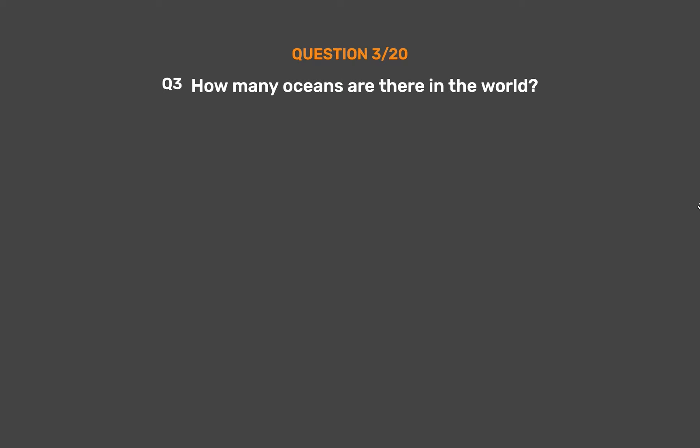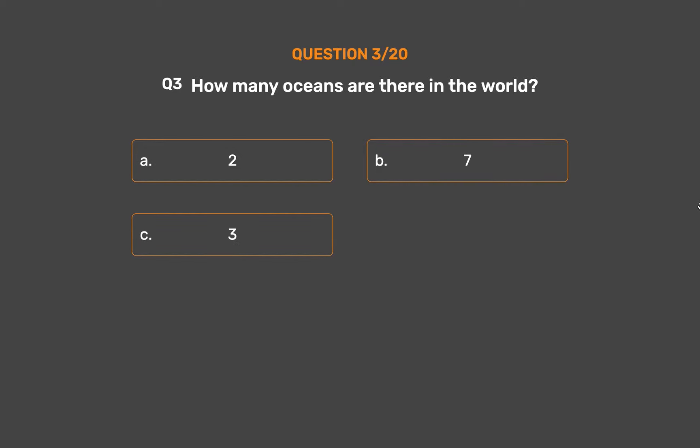Question Number 3. How many oceans are there in the world? Option A: 2. Option B: 7. Option C: 3. Option D: 5.